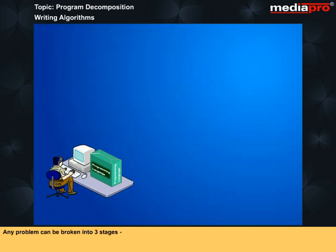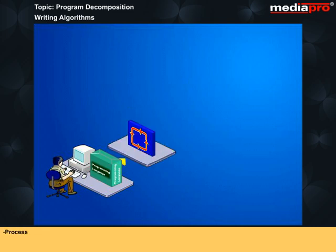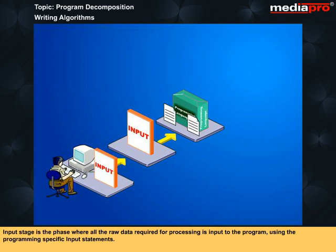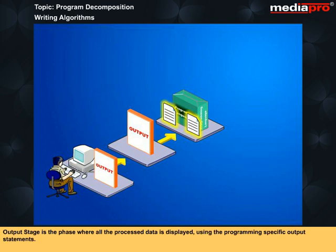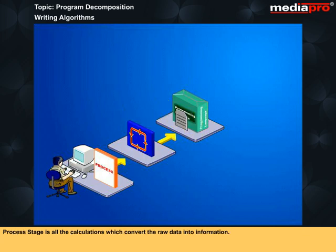Any problem can be broken into three stages: Input, Process, and Output. Input stage is the phase where all the raw data required for processing is input to the program using the programming specific input statements. Output stage is the phase where all the process data is displayed using the programming specific output statements. Process stage is all the calculations which convert the raw data into information.